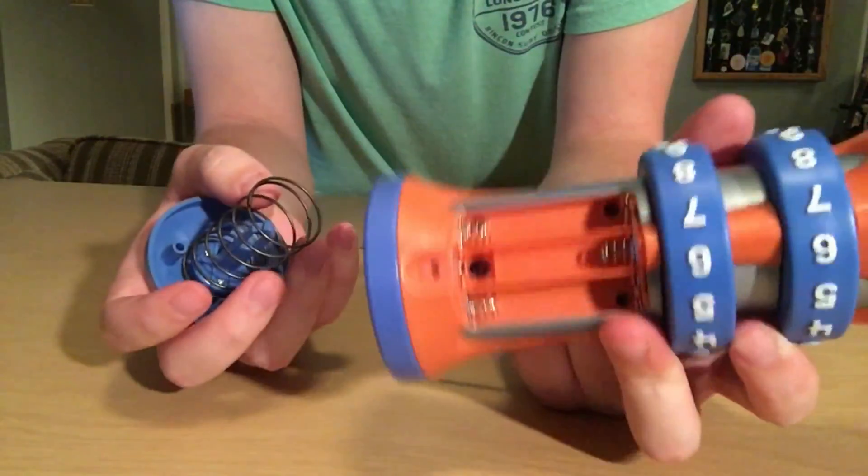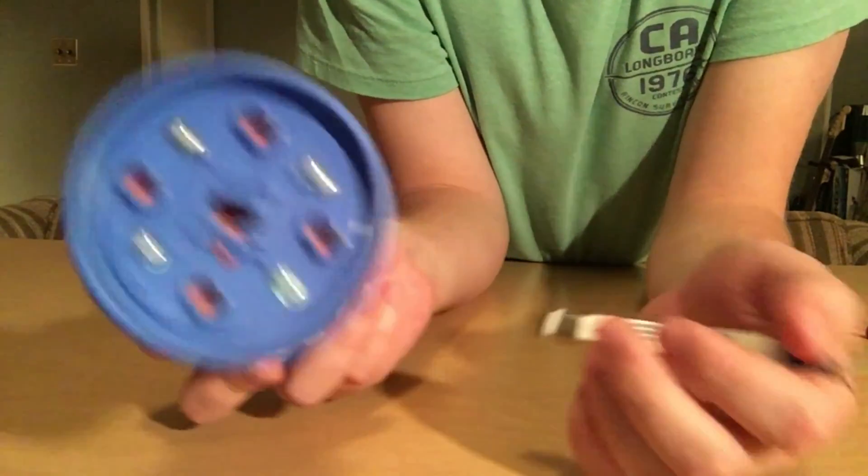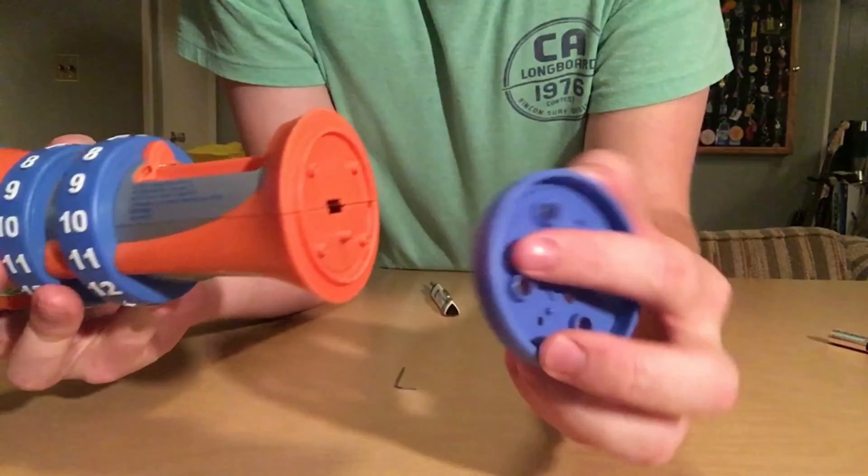Once you've taken the screws out of the battery pack, you can pop off the button. There's four screws where the button once was. Once those come off, this piece just pops right off.